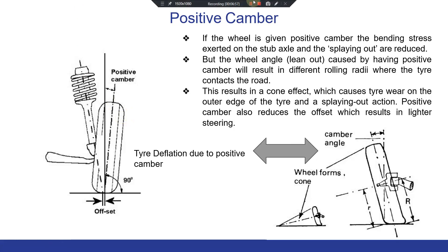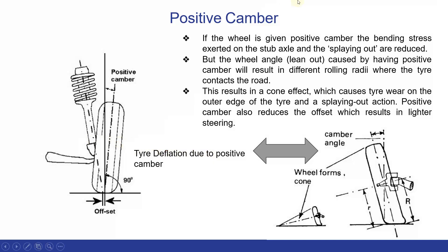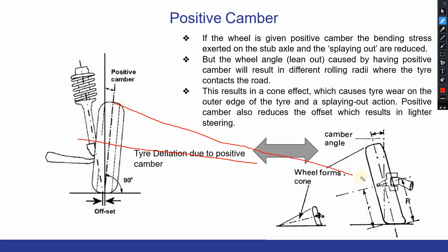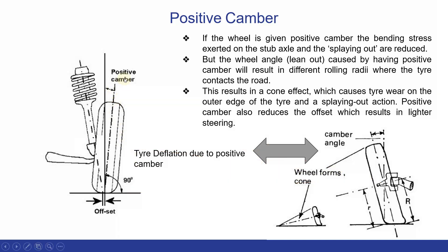When the outer end of the wheel faces outward and the inner side facing the road faces inward, this is known as positive camber. In positive camber, drawing an axis through the center of the wheel forms an imaginary cone when the line is extended. The main advantage of positive camber is that bending stresses on the stub axle can be minimized. However, it has certain disadvantages.